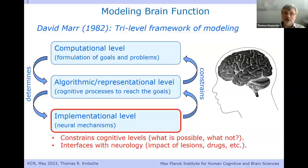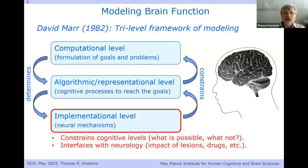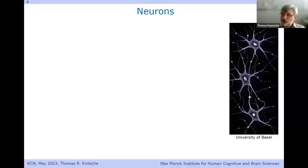The implementation level is also where the interface to other scientific domains lies — biology in the wider sense, and in particular neurology: what is the impact of lesions, how do drugs influence cognition, and so on. If we want to study the implementation level, sticking to the neuronal doctrine means we have to look at neurons.